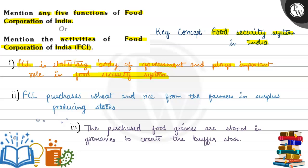India's food security system plays an important role in India. FCI purchases wheat and rice from the farmers in surplus producing states — जिन states में wheat और rice surplus में होता है, वहां से FCI farmers से ये खरीद लेती है.